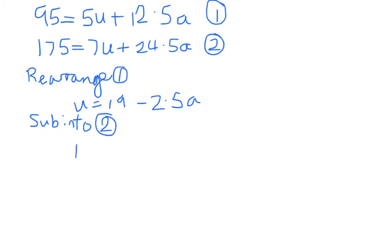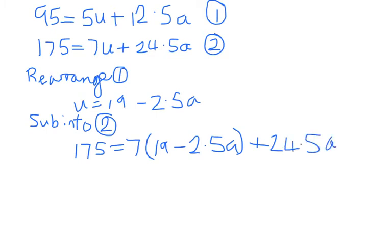So when we do that, we get 175 equals 7 brackets 19 minus 2.5A, close brackets, plus 24.5A. This really doesn't do enough for my handwriting. Do a bit of jiggery-poggery, move things around, and you should end up with 42 equals 7A, which means A, acceleration, equals 6 meters per second squared. That was supposed to be a 2.